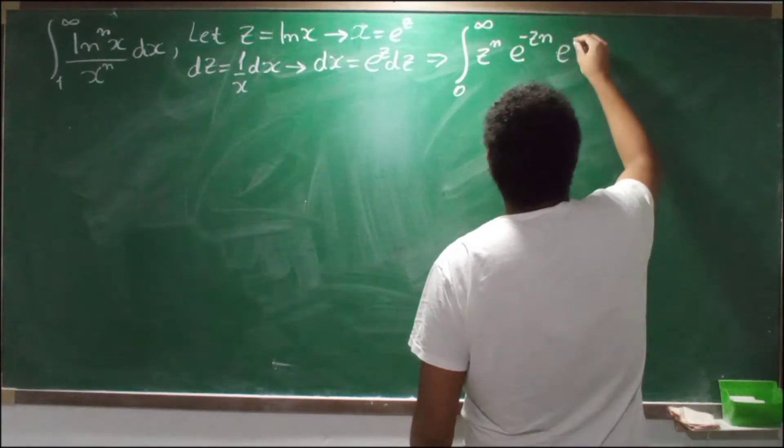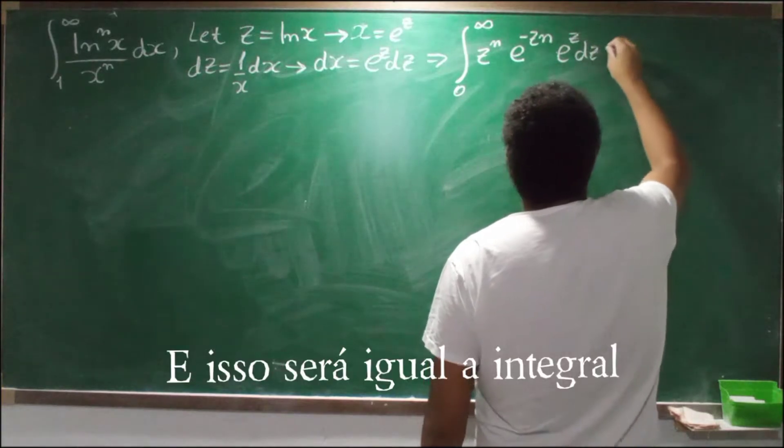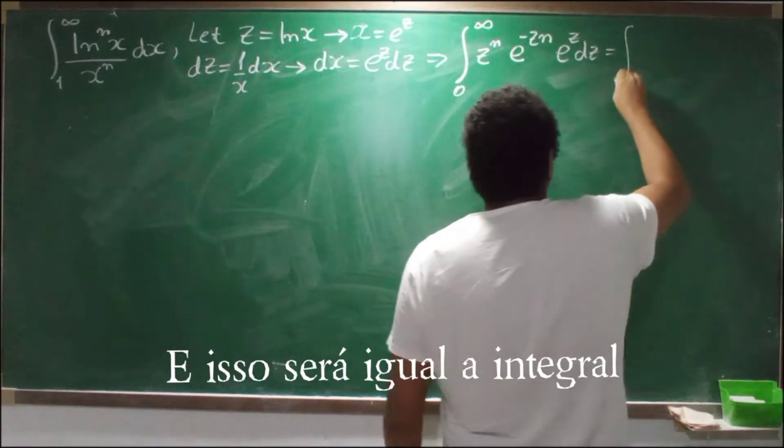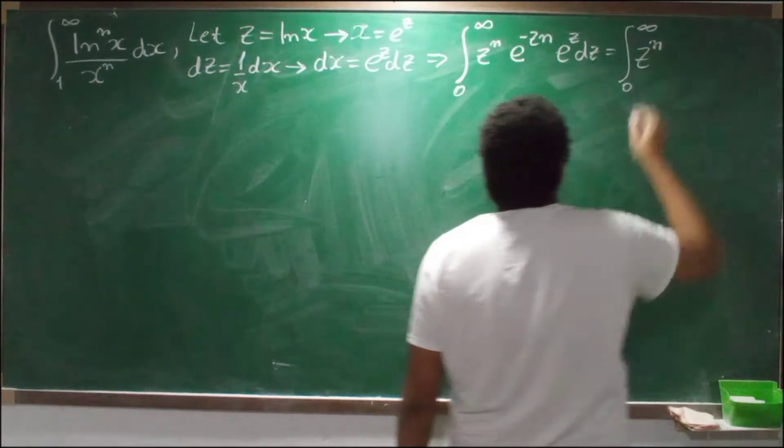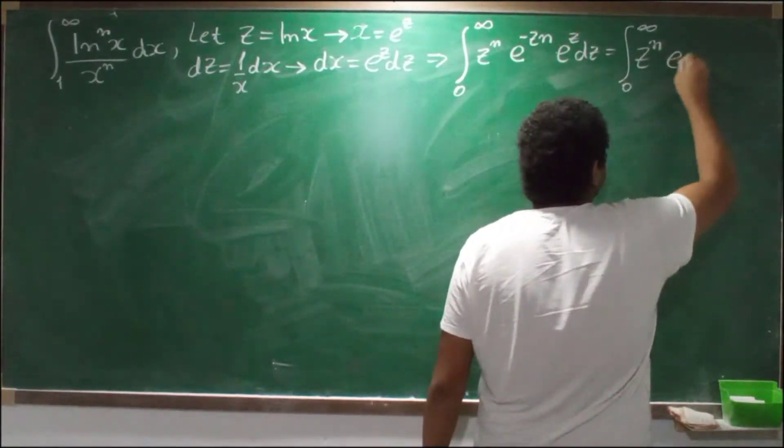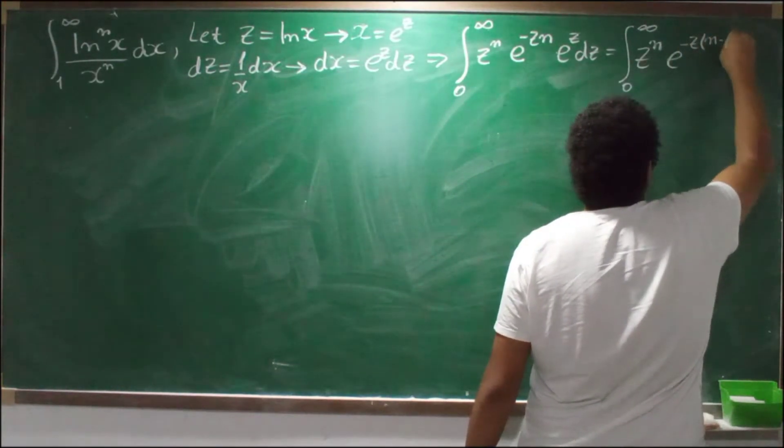We have this e here, so e to the z times dz. And this will be equal to the integral from 0 to infinity of z to the power n times e to minus z times n minus 1 dz.